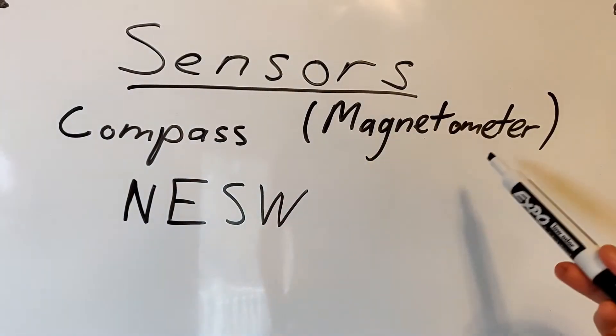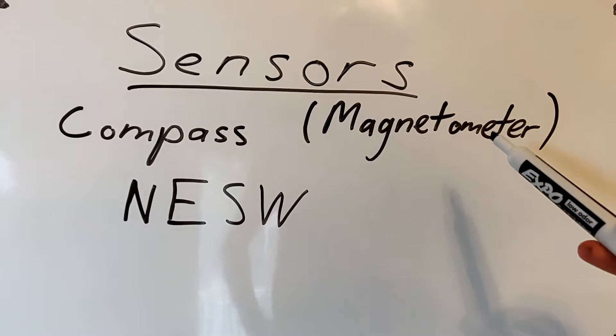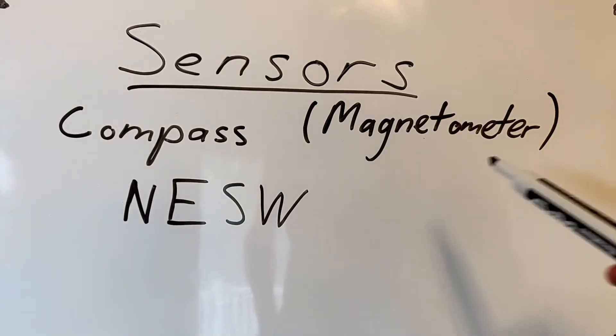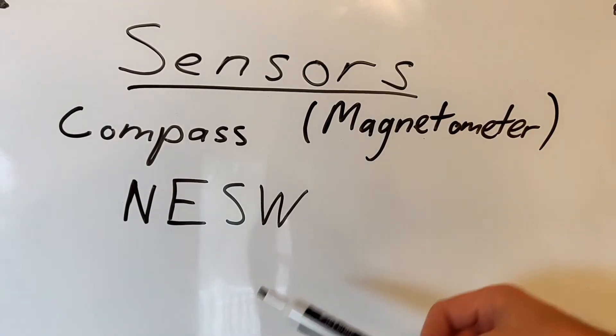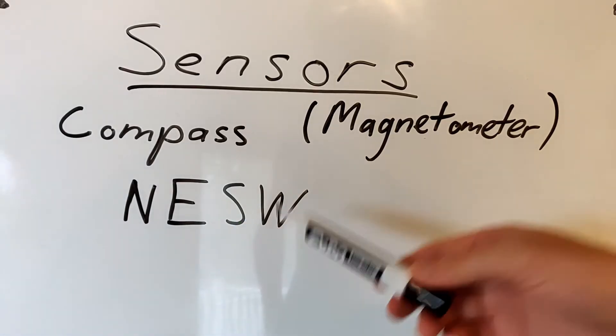The compass or the magnetometer works by sensing Earth's weak magnetic field and that will tell us the heading of the drone. In other words if it's facing north, east, south, or west.